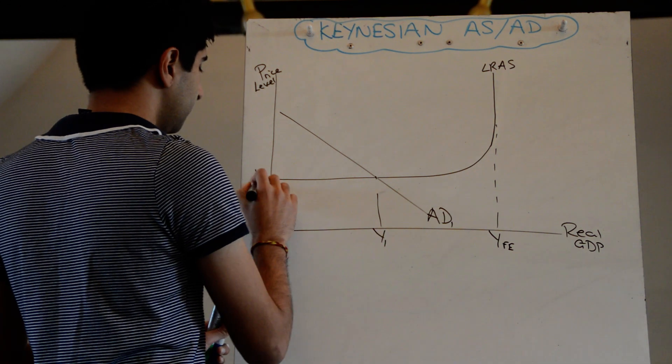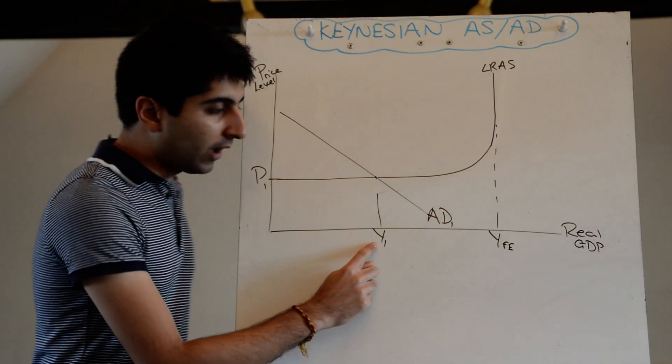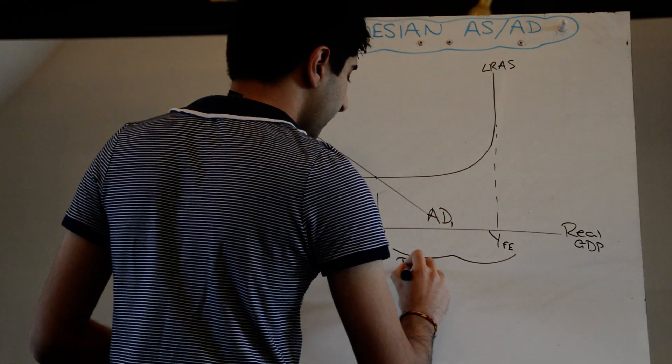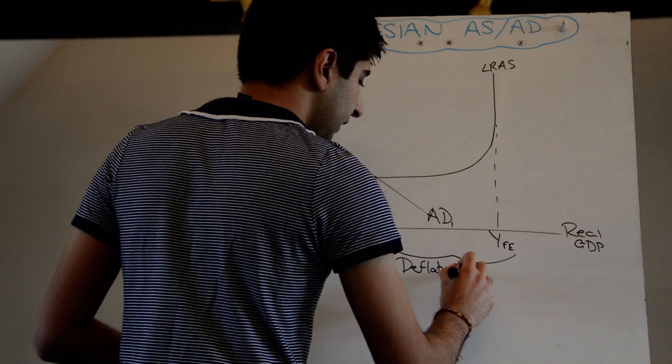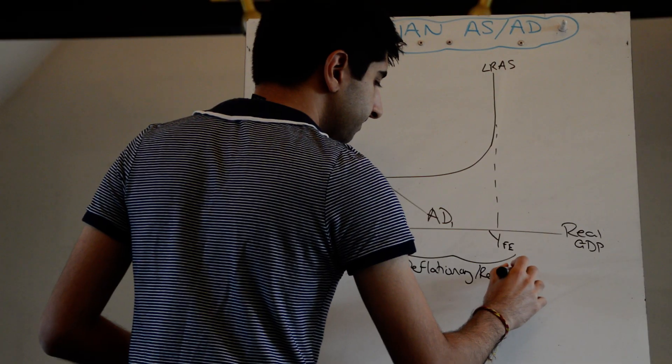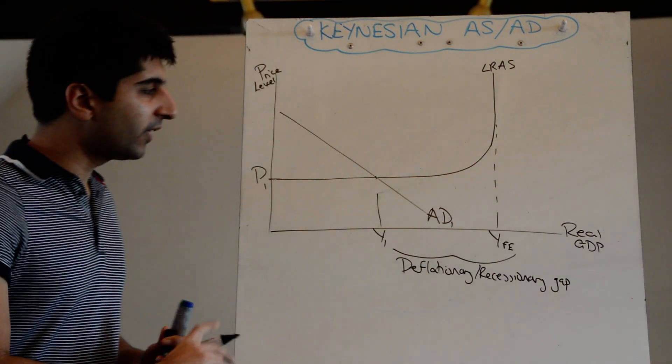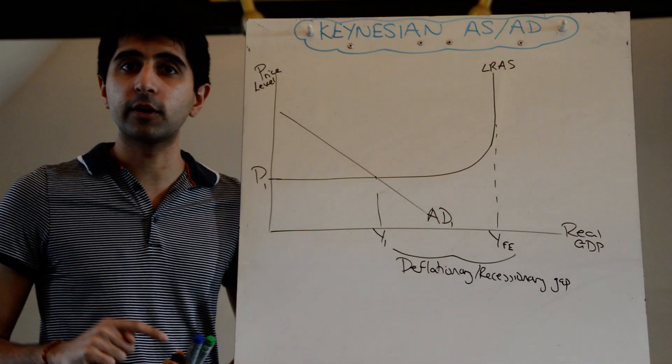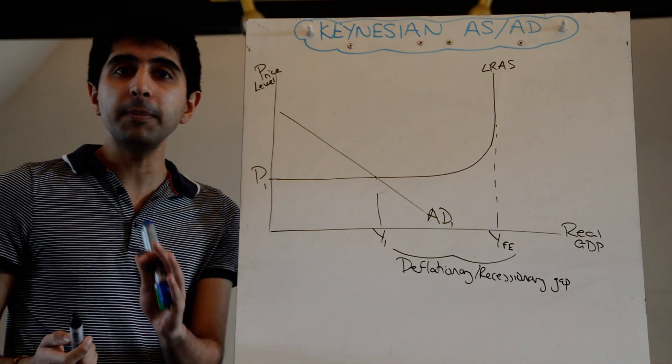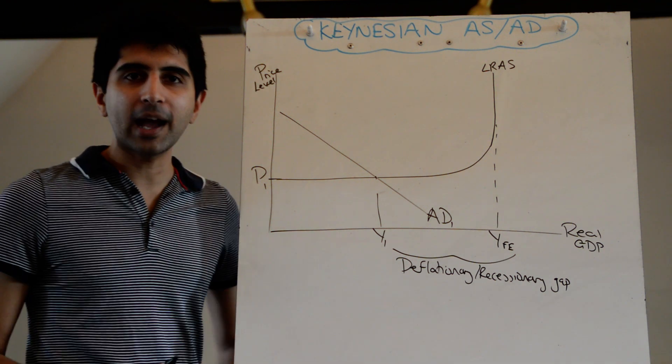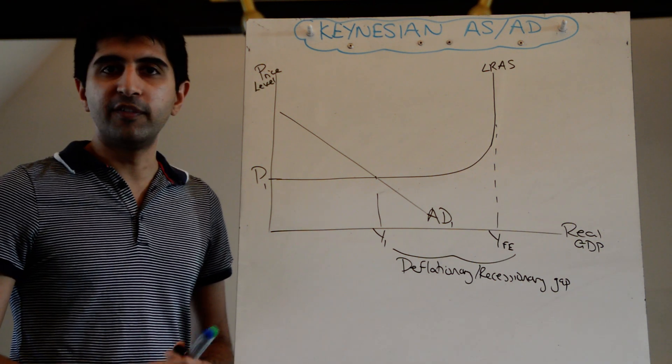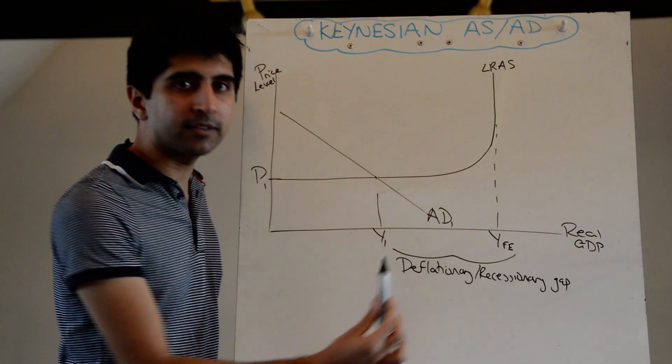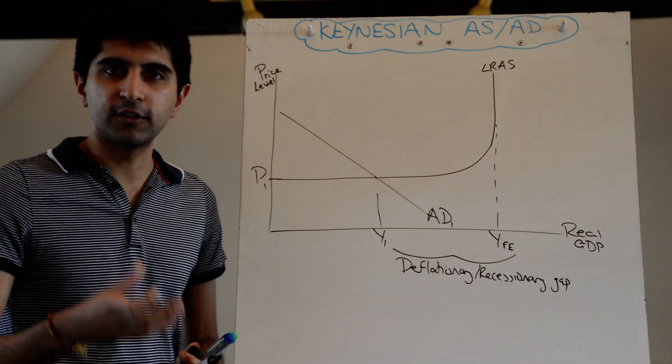Keynes argued that could well be a long-run equilibrium, not just a short-term equilibrium like classical economists would argue. Why? Because wages don't adjust—wages are sticky downwards. We're not going to see a revision downwards of wages. The economy can be stuck there for the long term, suffering from mass unemployment, unrest, and social issues.